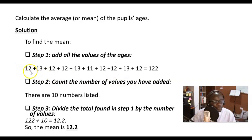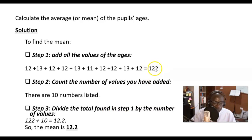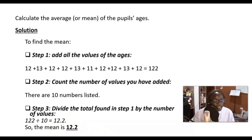Step two: count the number of values you added. Counting: one, two, three, four, five, six, seven, eight, nine, ten — there are 10 numbers in the list. Step three: divide the total from step one by the number of values. So 122 divided by 10 gives 12.2. The mean is 12.2.